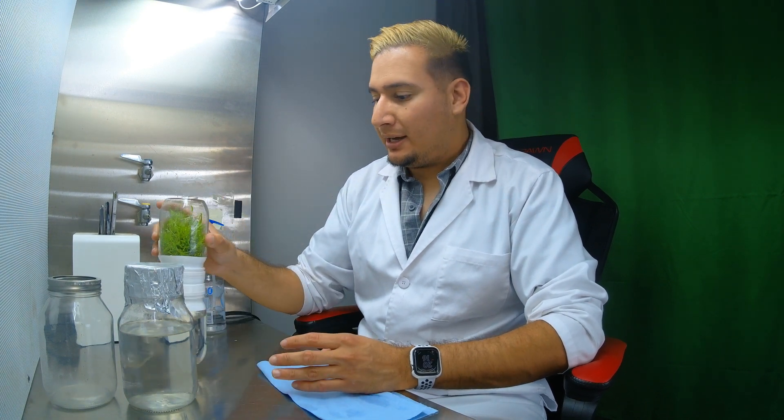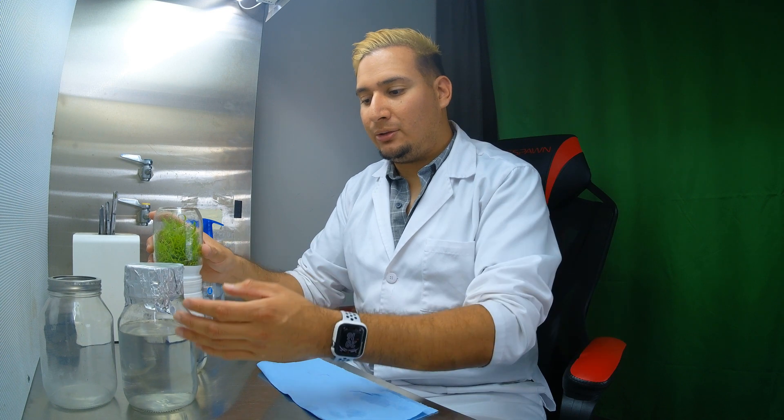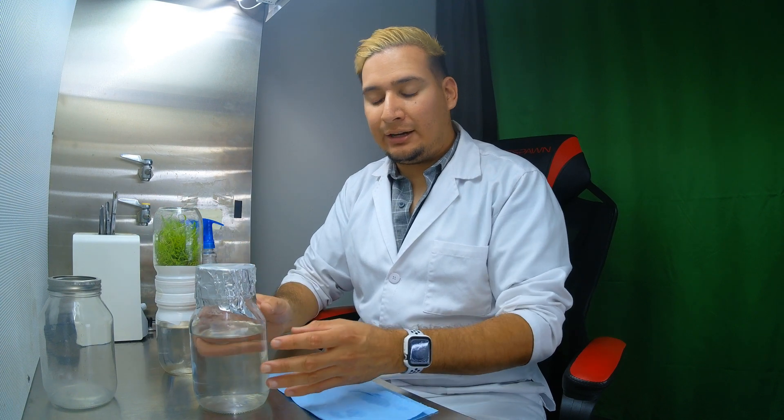But for now I want to move it into the big 32 ounce canning jar. So what I did already, I already made media and then I sterilized it. Now the reason I have the two flats right here is that if I have the whole thing, it's too tall and it doesn't fit in my pressure cooker.